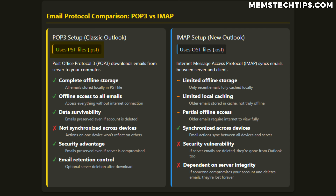With a POP3 setup, the emails are saved to a PST file — a personal storage file saved to your computer. It creates an offline copy of every single email, and you'll always have access to those emails in that PST file, even if you don't have internet access and the email is deleted from the server, or the entire email account is deleted. With an IMAP setup, the emails or entire mailbox are saved to an OST file, which Microsoft says is an offline storage file, but in my experience is not a truly offline copy of everything on the server. For example, if you're not connected to the internet and try to access older emails in an IMAP mailbox, it sometimes won't display the contents because only the latest emails are truly offline — the others are stored in a sort of cache.